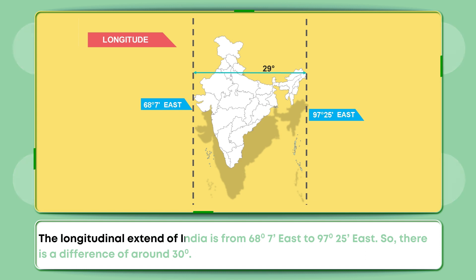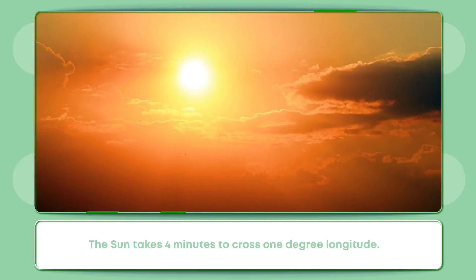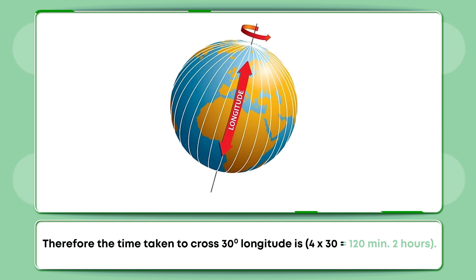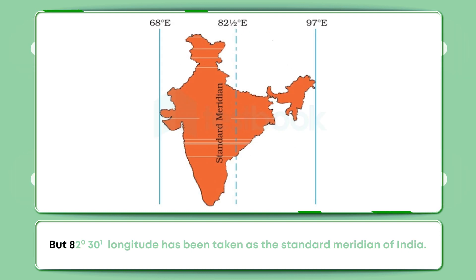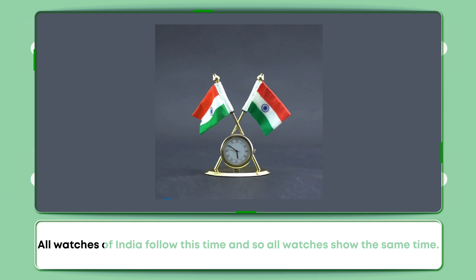The longitudinal extent of India is from 68 degrees 7 east to 97 degrees 25 east, so there is a difference of around 30 degrees. The sun takes 4 minutes to cross 1 degree of longitude. Therefore, the time taken to cross 30 degrees longitude is 4 times 30 equals 120 minutes, that is 2 hours. But 82 degrees 30 longitude has been taken as the standard meridian of India, and so all watches across India show the same time.